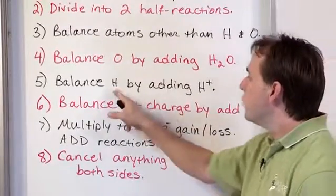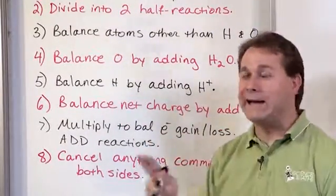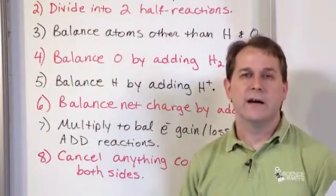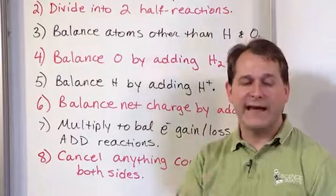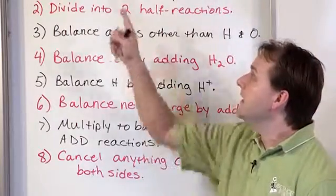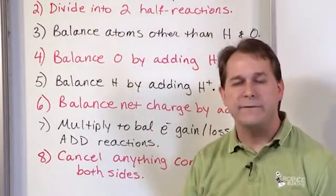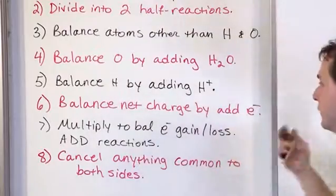Then we're going to balance hydrogen by adding these hydrogen ions to both sides, however many we need. And the reason we're adding hydrogen ions is because we're saying that these reactions are occurring in acidic solution, so we have these extra hydrogen ions in the solution to participate.